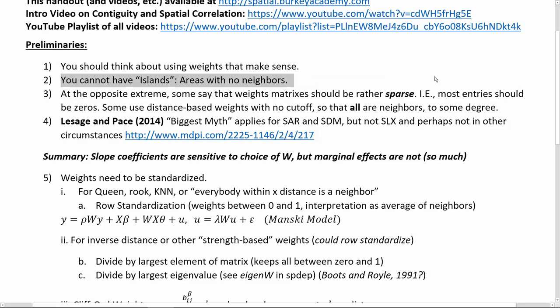Number two, you cannot have islands. An island is a region that does not have any neighbors. For example, if you were defining neighbors based on contiguity, whether things are next to each other, and you had the 50 United States with Alaska, well Alaska doesn't touch any of the other states and neither does Hawaii. That's a problem. You have to fix that somehow. If you try to do these calculations and you have some regions that have no neighbors, it just doesn't work.